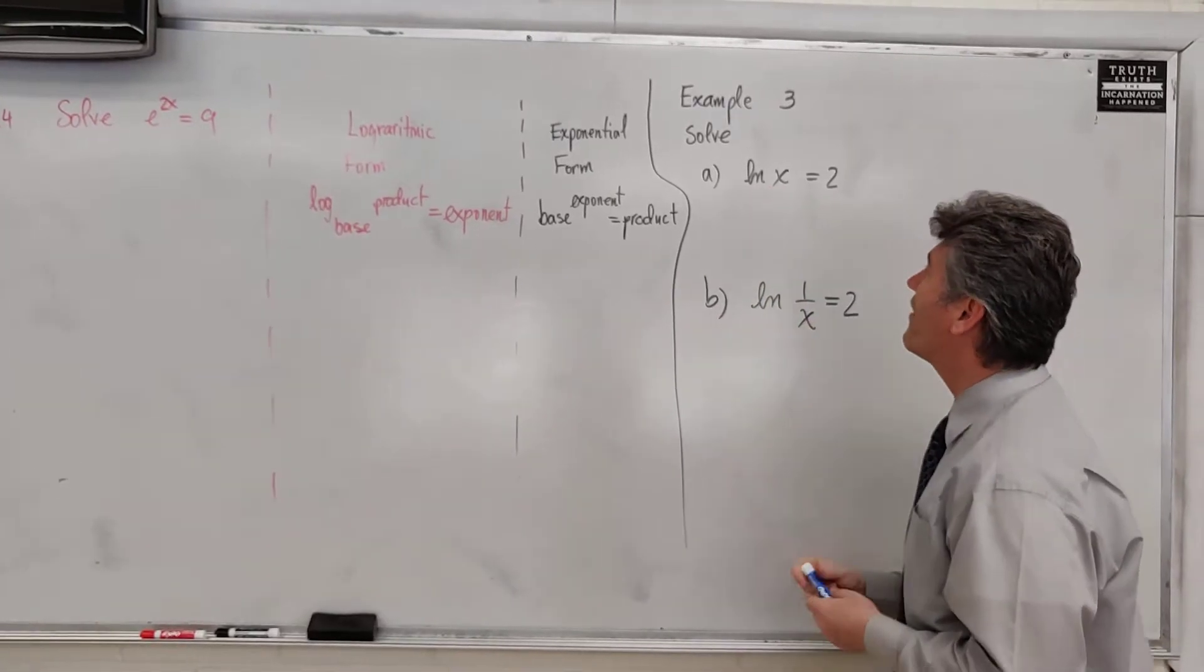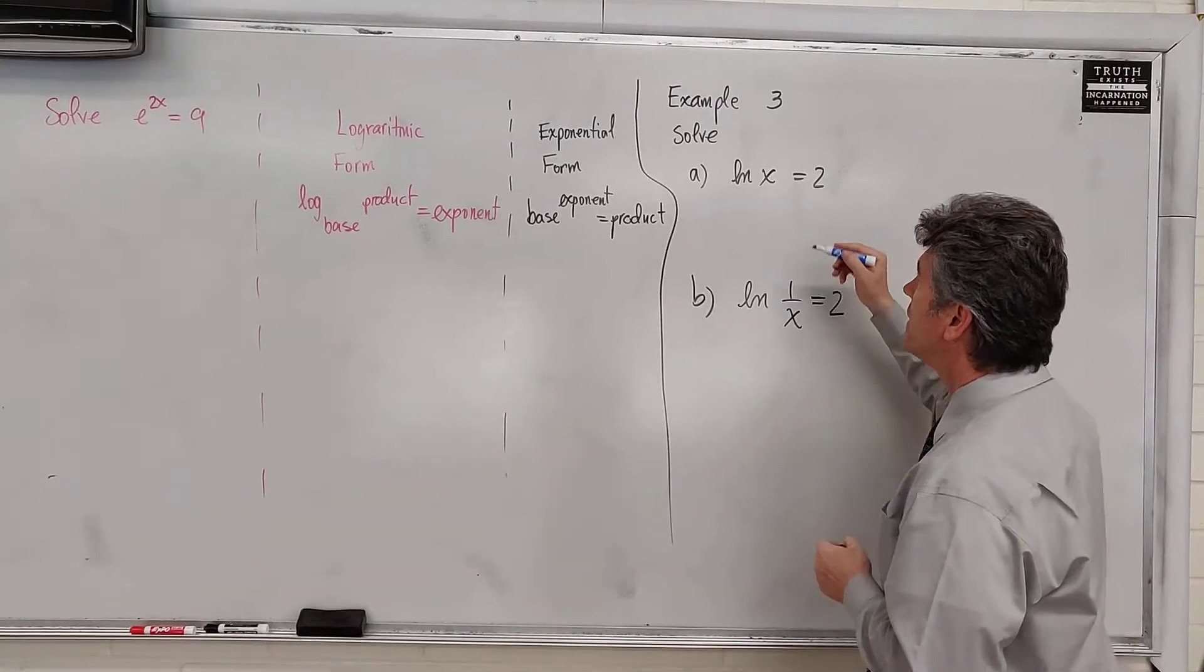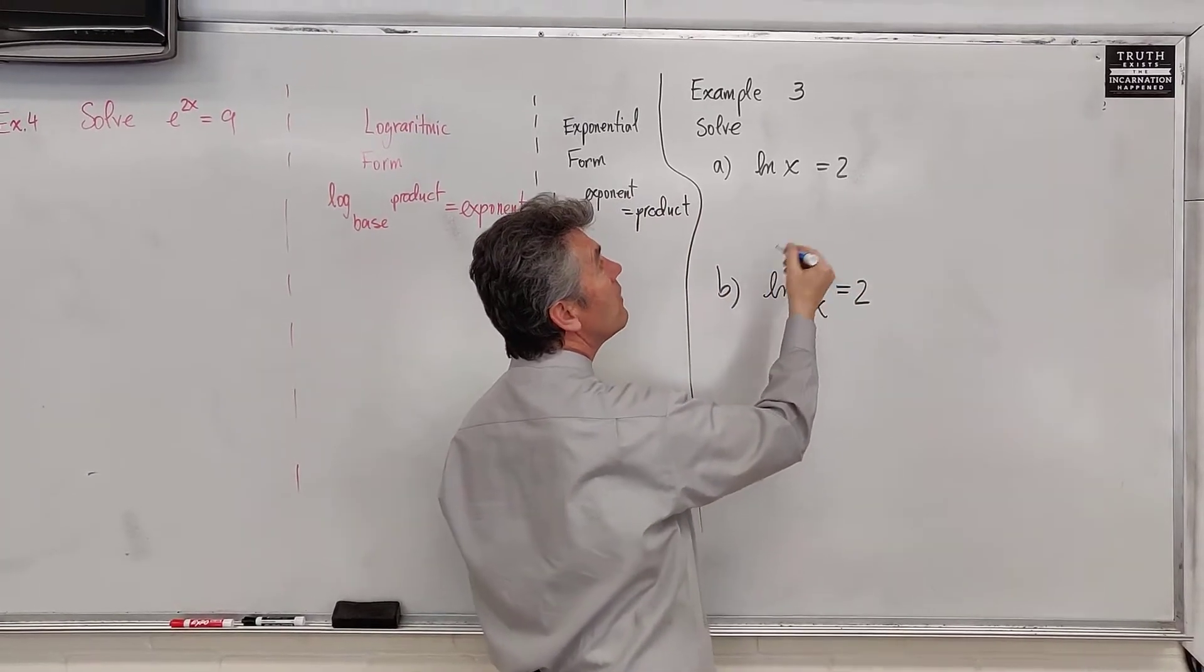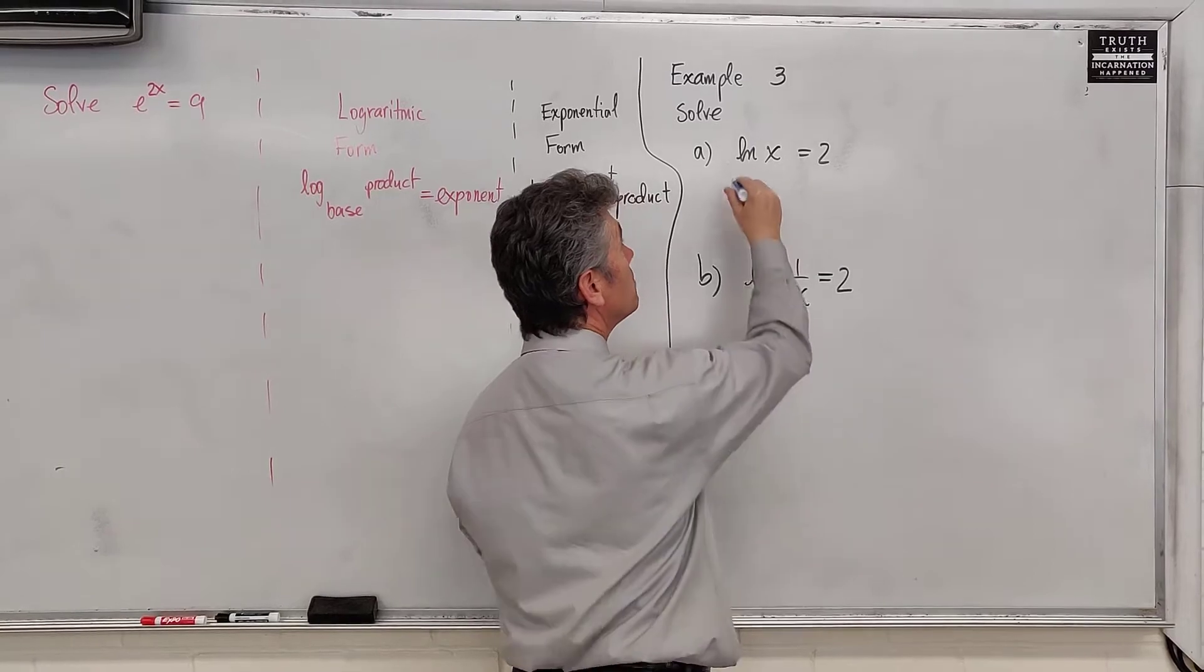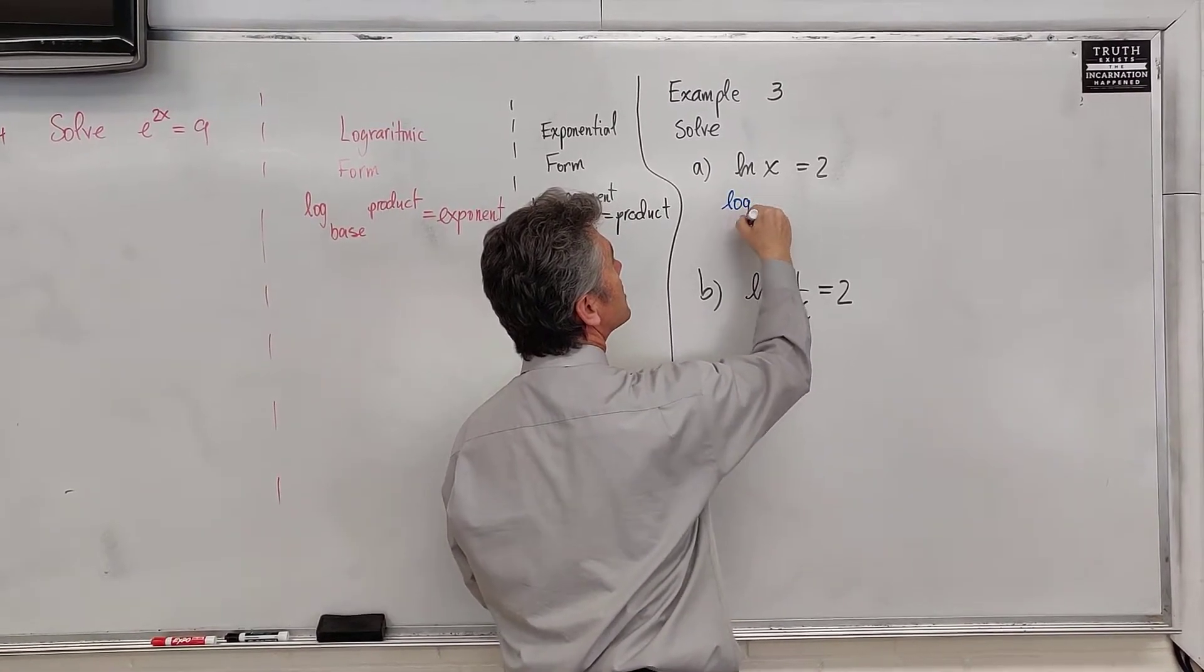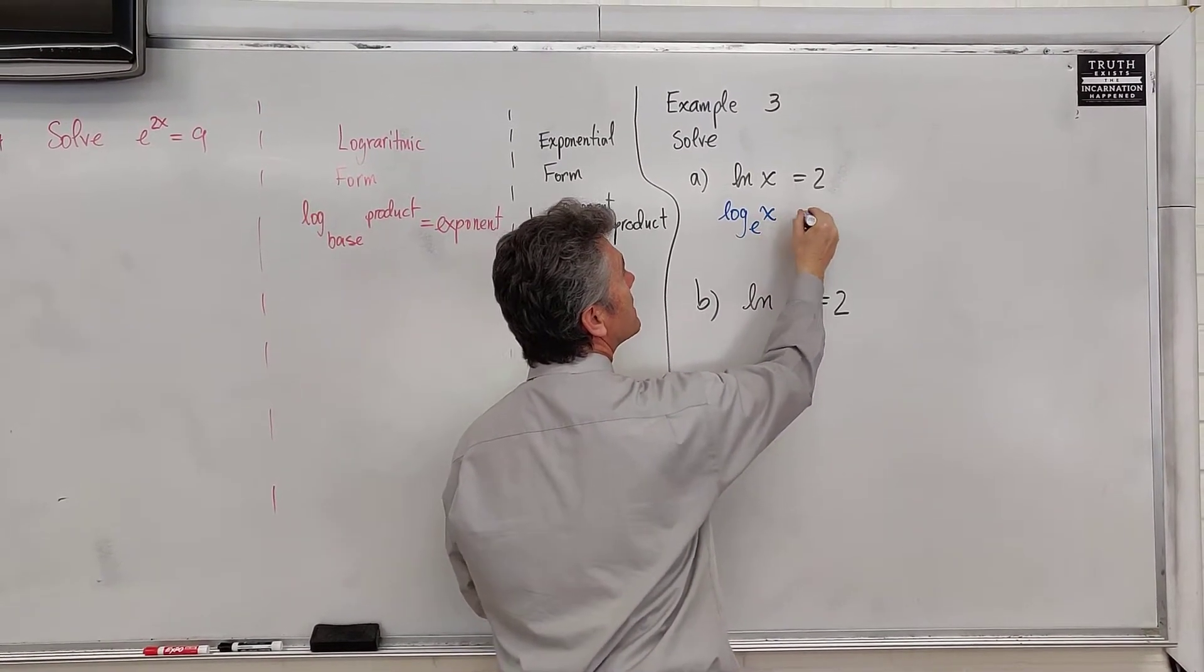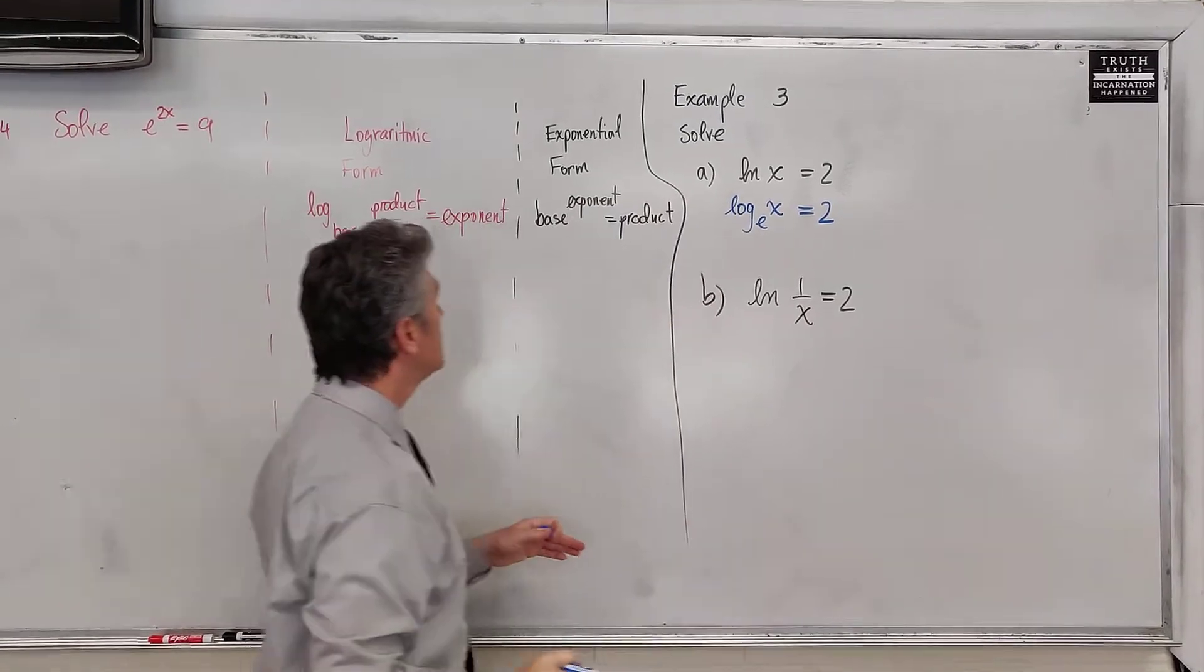Let's take a look at the first problem. Natural log of x is equal to 2. My suggestion, for all the students who are confused here, is rewrite it. This is log of x for the base of e is equal to 2.